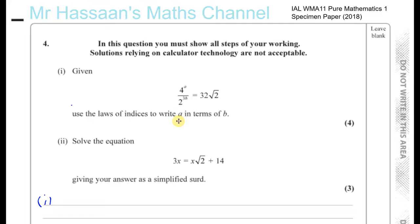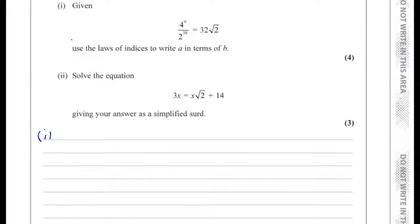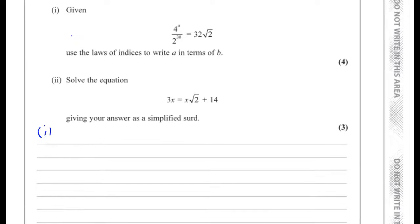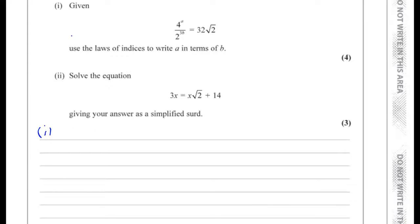We can see here that the numbers we have are all numbers which can be expressed in terms of powers of 2. When dealing with problems with indices, it's always a good idea to try to express everything to the same base. And I can see that 4 can be expressed as 2 to the power of something. 2 to the power of 3b is already expressed as 2 to the power of something. 32 can be expressed as 2 to the power of 5. And the square root of 2 can be expressed as 2 to the power of 1 half.